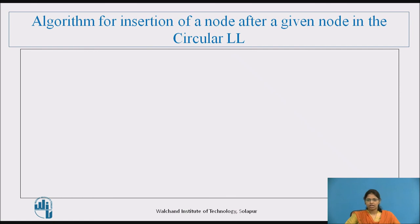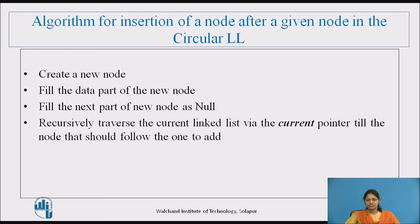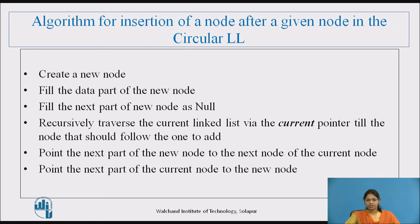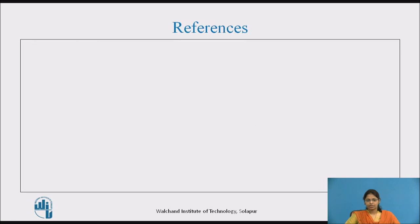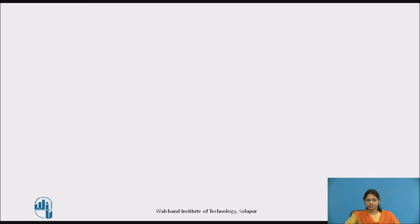Algorithm for insertion of a node after a given node in a circular linked list: First, create a new node and fill the data part. Fill the next part as null. Recursively traverse the linked list via the current pointer until the node that should follow the one to add. Then point the next part of the new node to the next node of the current node, and point the next part of the current node to the new node. Thank you.